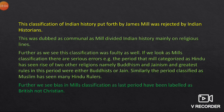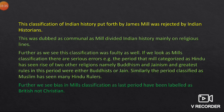Firstly, this classification was dubbed as communal, as Mill divided Indian history mainly on religious lines. Further, this classification is faulty as well. For example, the period that Mill categorized as the Hindu period saw the rise of two other great religions, namely Buddhism and Jainism, and even the greatest rulers in this period were either Buddhist or Jain. For example, Ashoka the Great, the Mauryan king, was a Buddhist. Similarly, the period classified as Muslim saw many Hindu rulers.